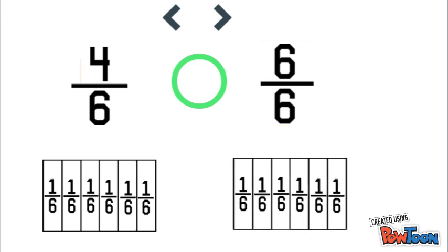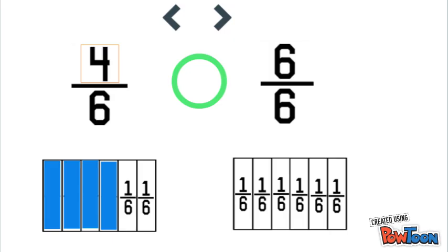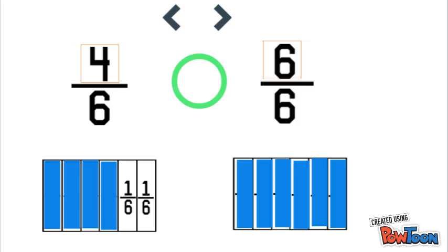Four sixths has a numerator of four, so that means we'll shade in four of our sixths. Six sixths has a numerator of six, so we'll shade in six of our sixths.